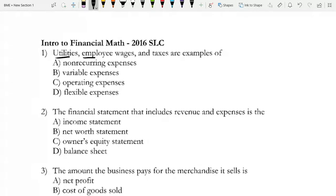The first question: utilities, employee wages and taxes are examples of nonrecurring expenses, variable expenses, operating expenses, or flexible expenses. It's definitely not nonrecurring because you'll have to pay these again if your business keeps running. These are expenses you have to pay to keep your business running - you need to pay employees, utility costs, and taxes are requirements. So these are considered operating expenses.